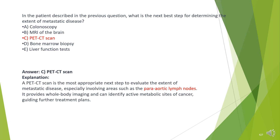The answer is C. PET-CT scan. A PET-CT scan is the most appropriate next step to evaluate the extent of metastatic disease, especially involving areas such as the para-aortic lymph nodes. It provides whole-body imaging and can identify active metabolic sites of cancer, guiding further treatment plans.